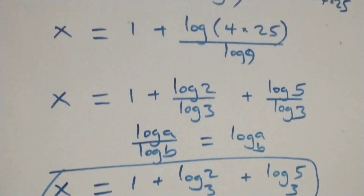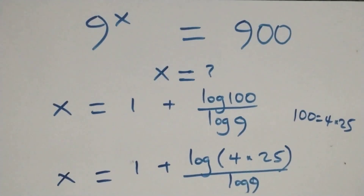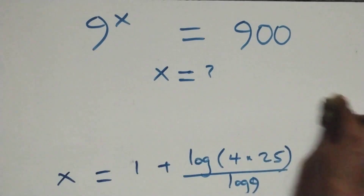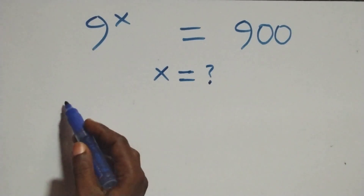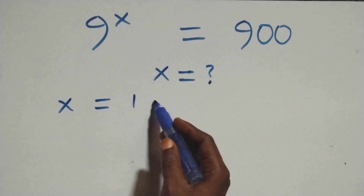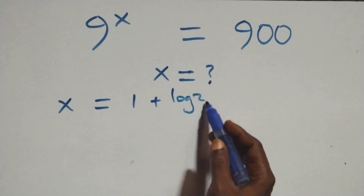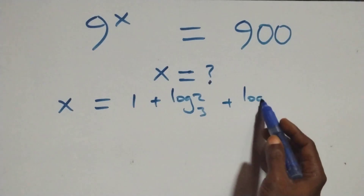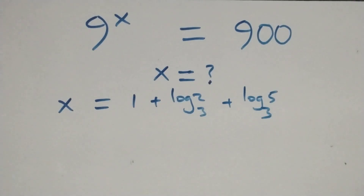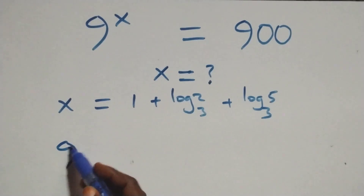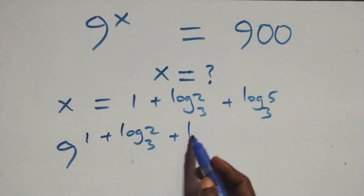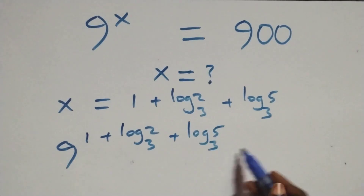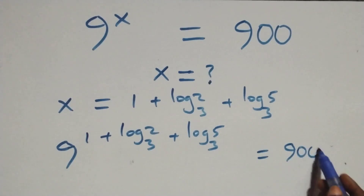We substitute the value of x, which is x equals to 1 plus log base 3 of 2 plus log base 3 of 5. Then what we have becomes 9 raised to the power (1 plus log base 3 of 2 plus log base 3 of 5), and this should equal 900 on the right-hand side.